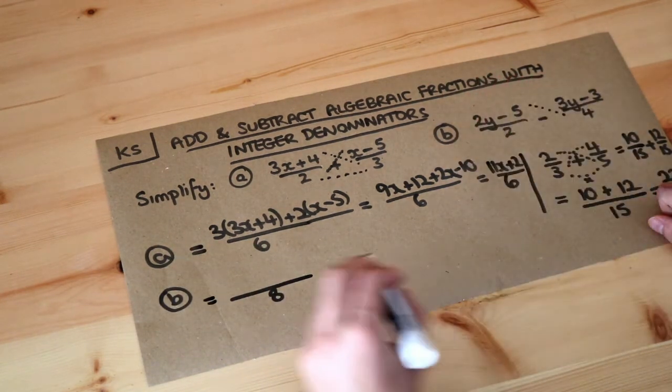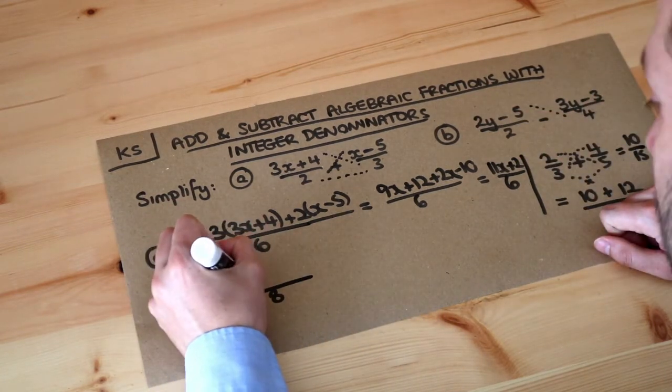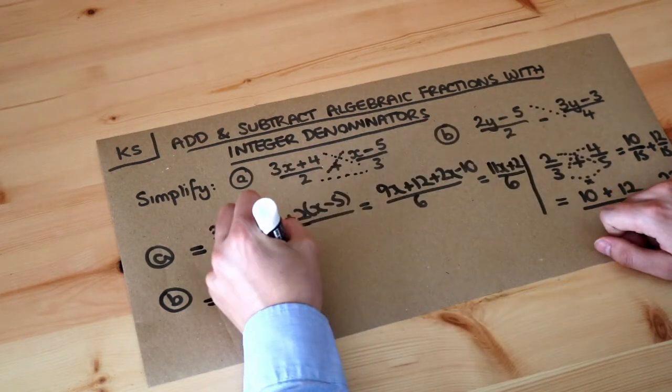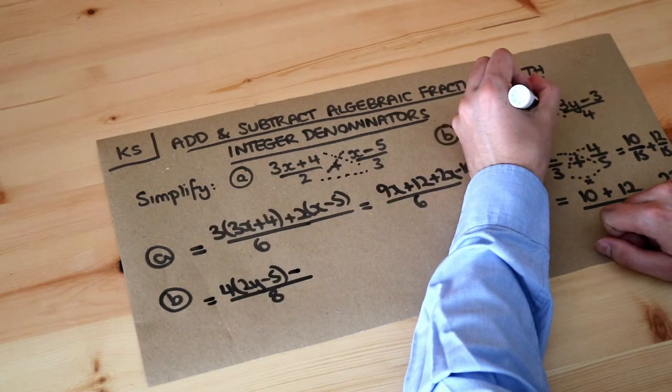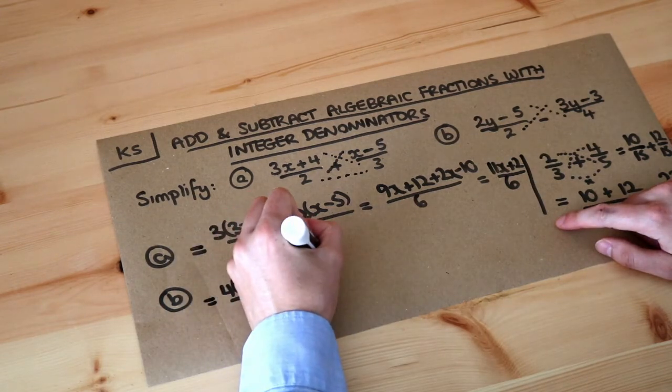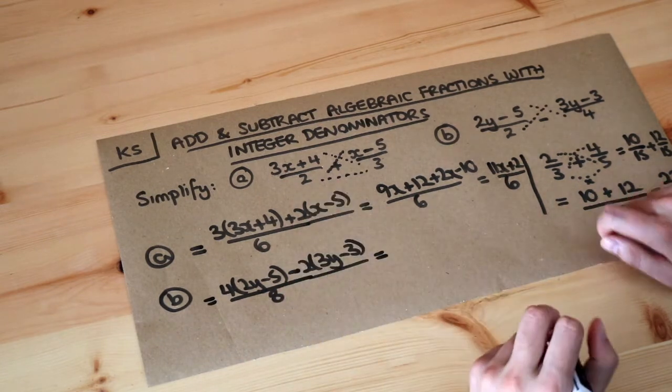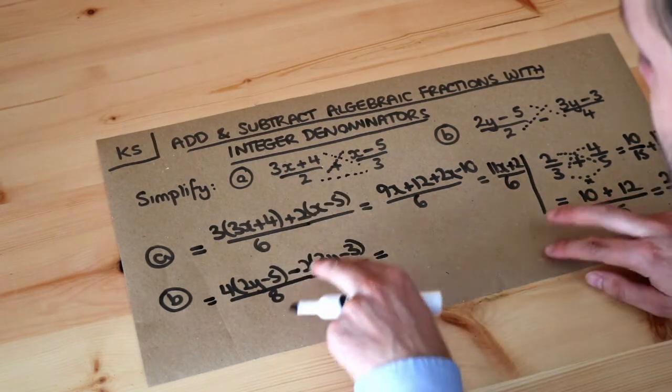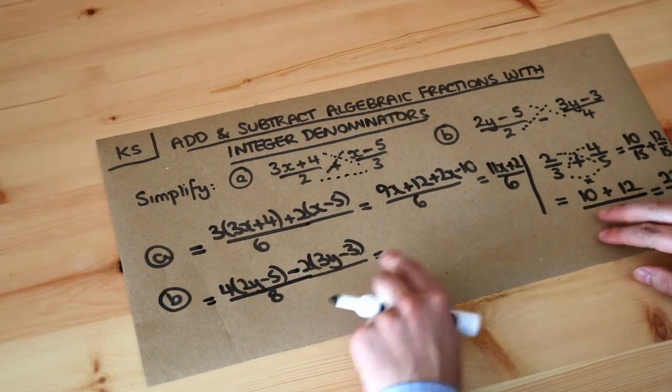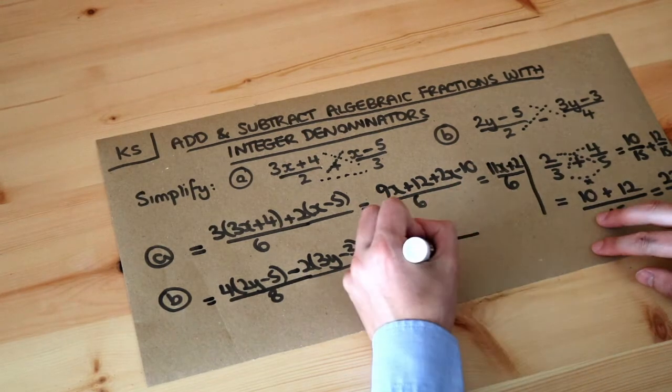So I do this times this. So four times two y minus five using brackets. Four times two y minus five. And then minus in the middle. And then the two gets multiplied by the three y minus three. So two times three y minus three. And then I'm going to expand out. Now the reason I've been really careful of not trying to just expand it out without using the brackets initially is because it's very easy to make a sign error when you're subtracting fractions. So we'll see that in a second.